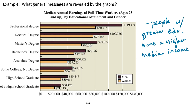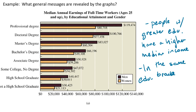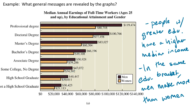Now if we compare the orange and brown bars, in every single category the brown bar is higher than the orange bar. That tells us that in the same education bracket, men make more than women, because for every single category the brown bars are higher than the orange bars. These are just a couple of basic things we can get from this graph without having any specific questions — just some basic facts we can see.